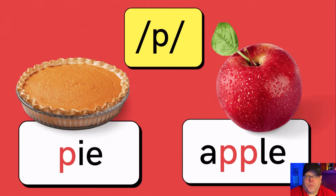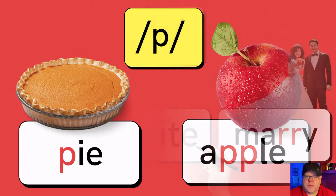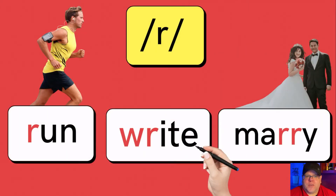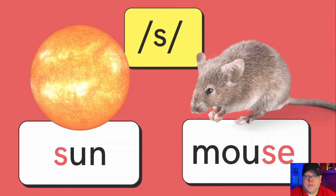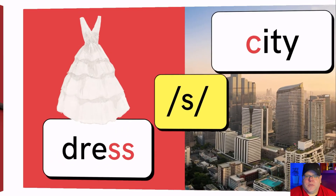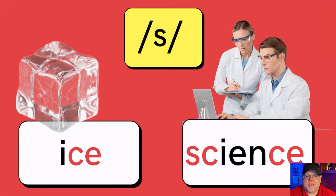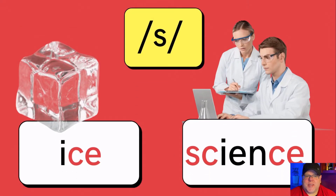P as in pie or apple. R as in run, write, or marry. S as in sun or mouse. S as in dress or city. S as in ice or science.